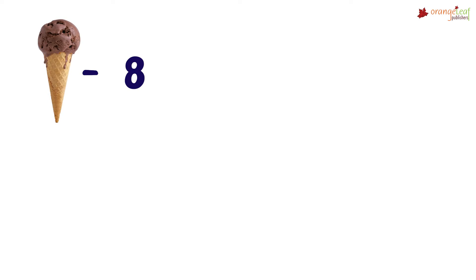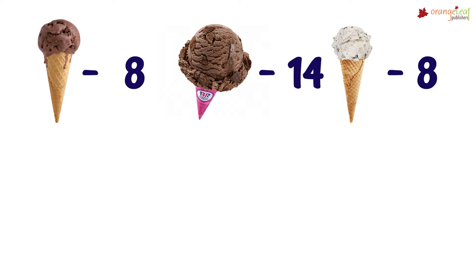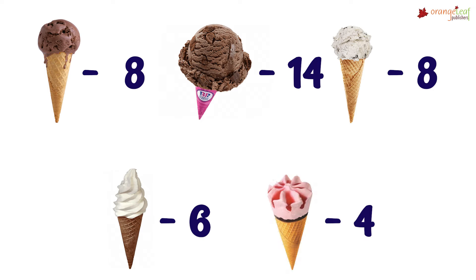Mr. and Mrs. Sharma are planning a party for the students, and the students are asked to vote for their favorite ice cream flavors. This is the information we have: eight students voted for chocolate, 14 voted for chocolate chip, eight voted for cookie dough, six voted for vanilla, and four voted for strawberry.